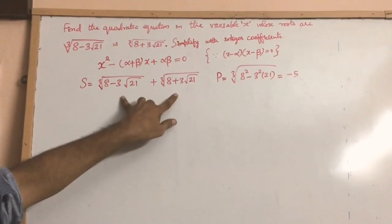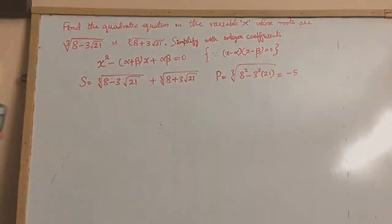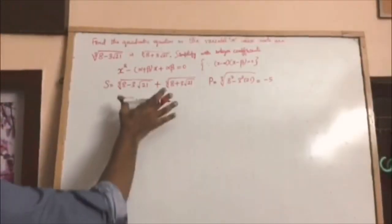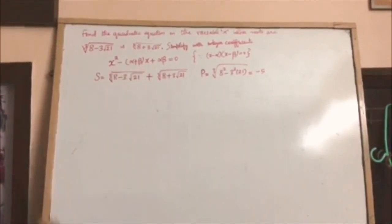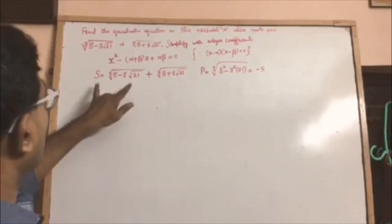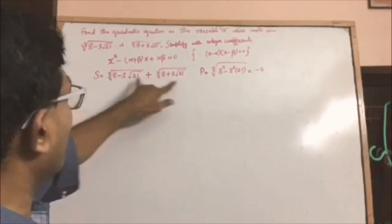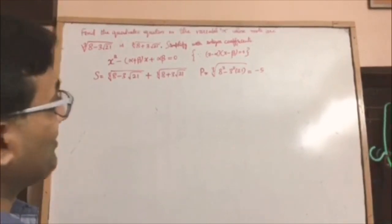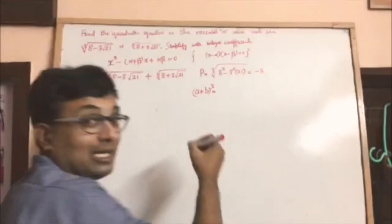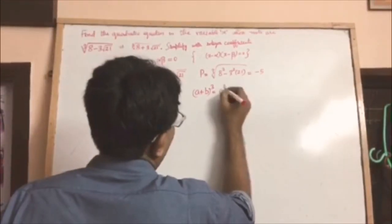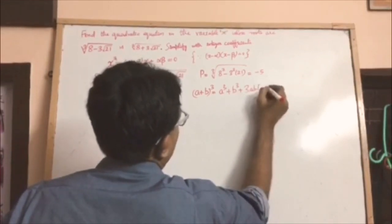Now the sum of the roots is a little more tricky to simplify into an integer. So the goal is to find the sum of these roots as an integer. We will raise both sides to the power 3 because we have cube roots involved, and use the formula: (a plus b) cubed equals a cubed plus b cubed plus 3ab times (a plus b).